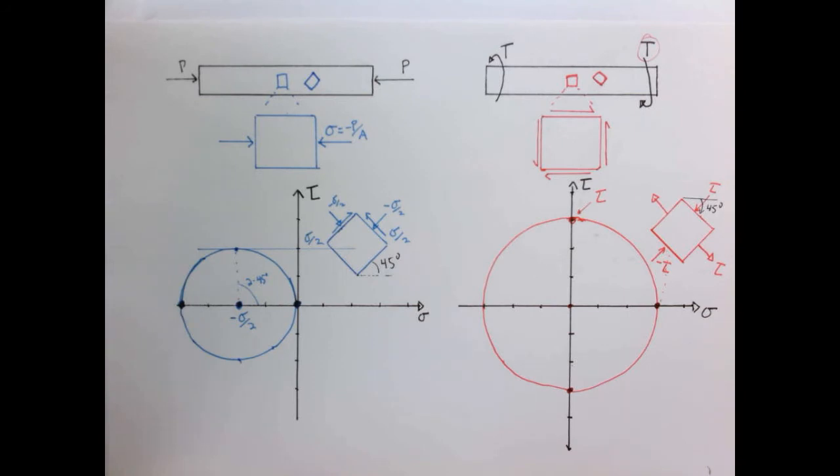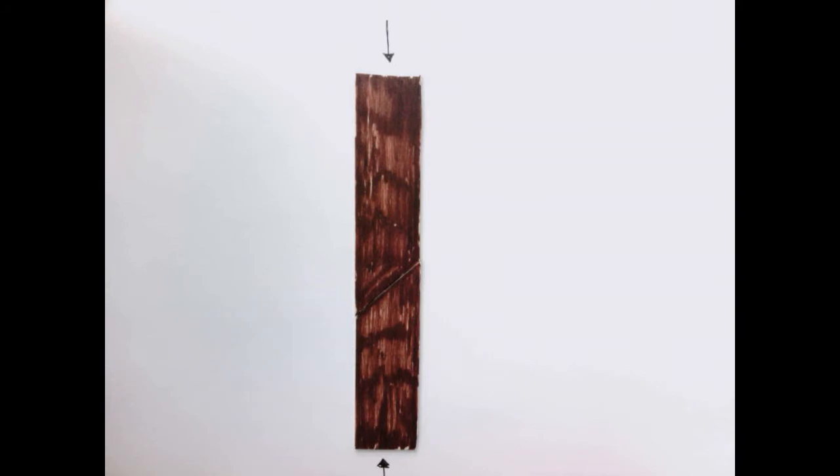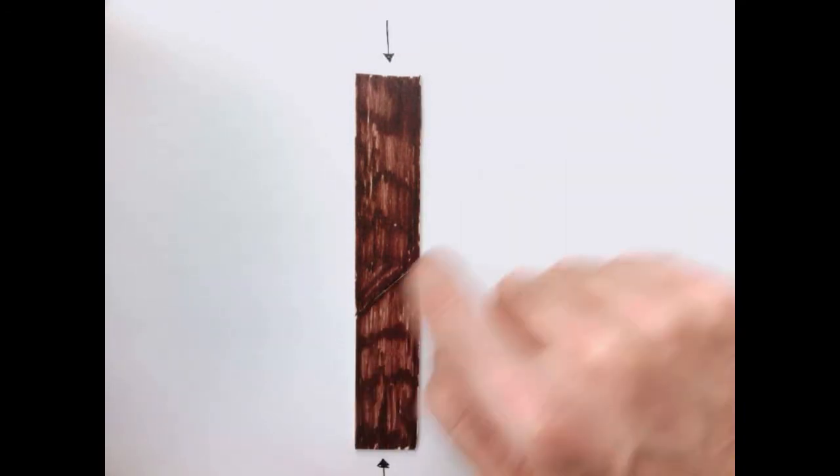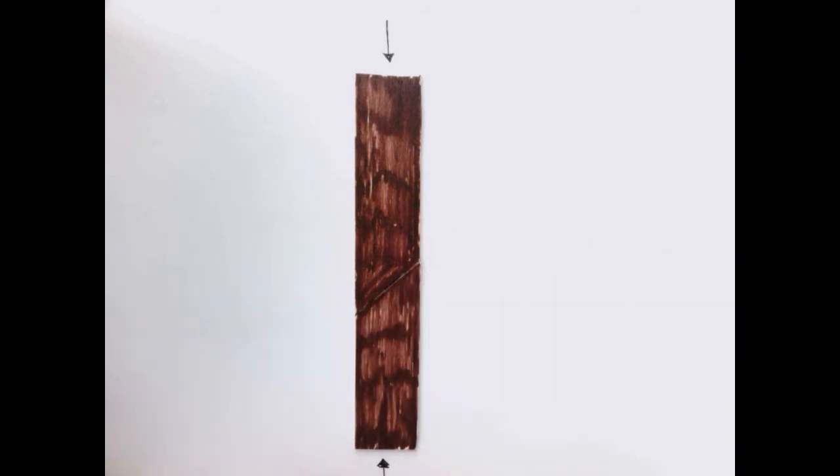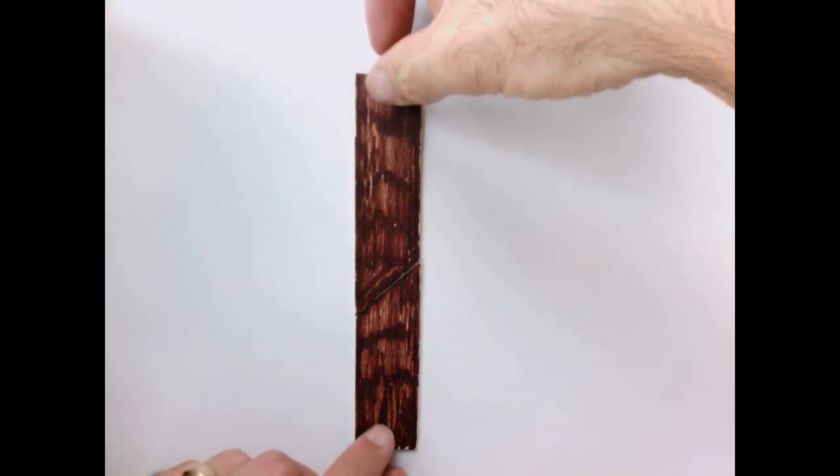Okay, so now let's look at some real world consequences of these two pictures here. Look at our column in compression. So just to summarize, Mohr's circle tells us that when we have a column in compression that the maximum shear stress is oriented along a plane at 45 degrees.